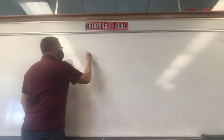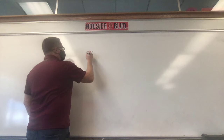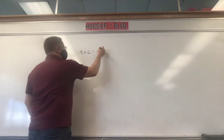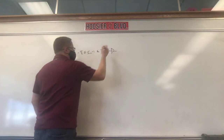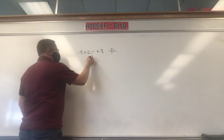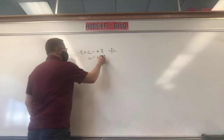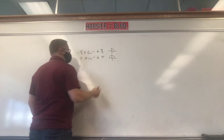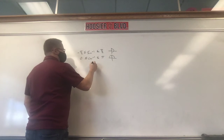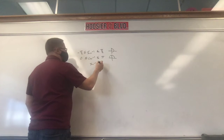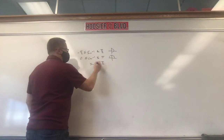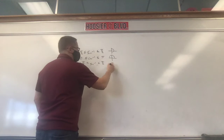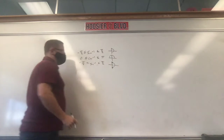From yesterday's notes: inverse sine must be between negative pi over 2 and positive pi over 2, and we had the picture of the right side of the unit circle. For inverse cosine, it's got to be between 0 and pi — that's the top half of the unit circle. For inverse tangent, it's between negative pi over 2 and pi over 2, not including those endpoints, and we had the right side with open dots.